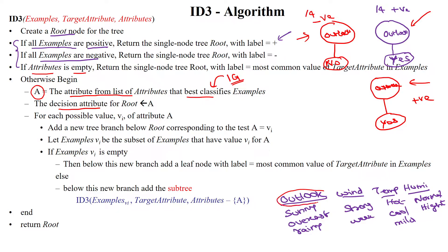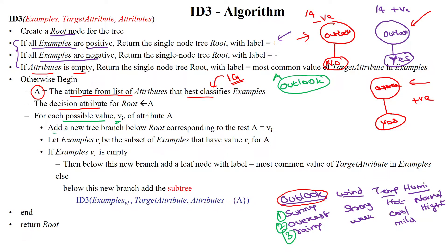For example, in this case we select outlook as the best attribute based on calculated information gain. Then, for each possible value of this attribute — sunny, overcast, rainy — we form a new subtree below the root. We have to make a subtree for sunny, a subtree for overcast, and a subtree for rainy.